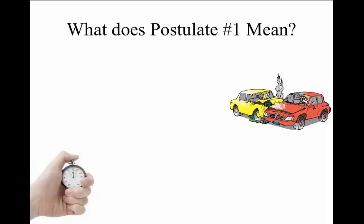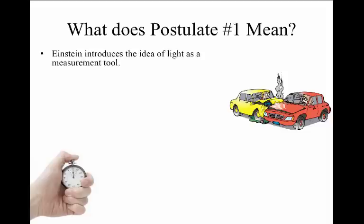Postulate number one gives us a measurement tool for how we actually measure time in relativity. Suppose we sit here and we have a stopwatch — this is our measurement of time relative to where we are right now — and we're looking at some other event off in the distance, maybe a pair of cars crashing. Einstein's first postulate uses light as a tool to measure time.